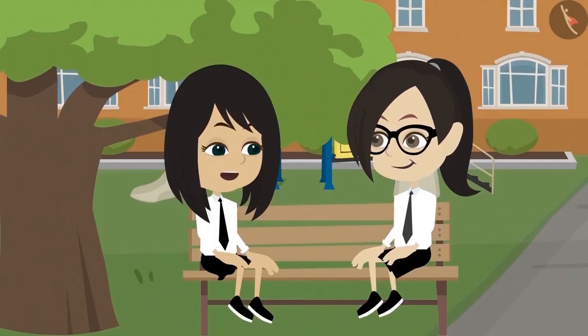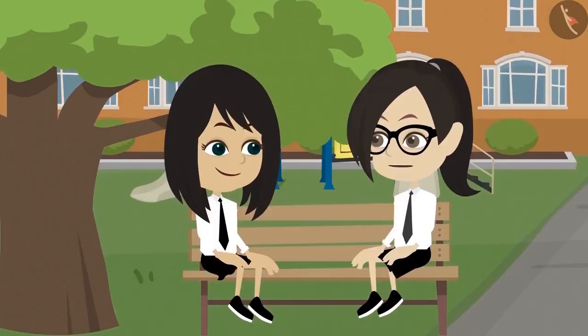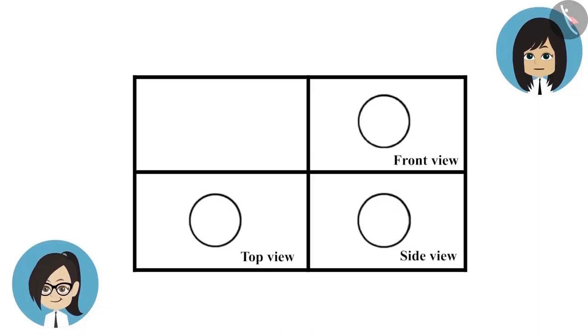Vandana, yesterday I was drawing the top view, side view and the front view of different objects. I found some objects whose shape you will not be able to guess easily. Well, this will be a lot of fun. Show. See this. Hey, these are all in the shape of a circle. How did this happen? Is this really the drawing of an object? Yes, and it can be easily found.